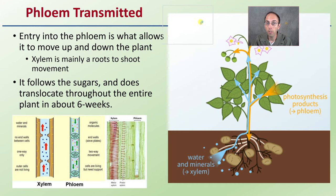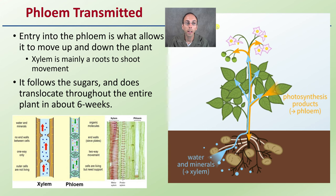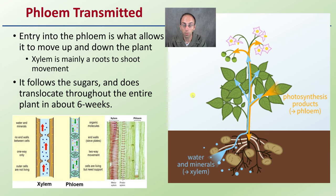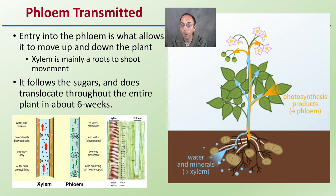Hop latent viroid is phloem transmitted. Entry into the phloem is what allows it to move up as well as down the plant. In contrast, xylem is mainly roots to shoots, or bottom to top. Phloem can go basically any direction — it follows the sugars, and hop latent viroid translocates through the entire plant via this route in about six weeks, so very quickly.